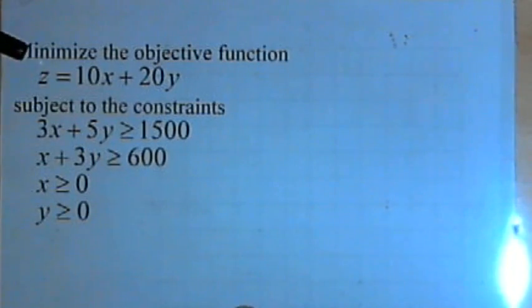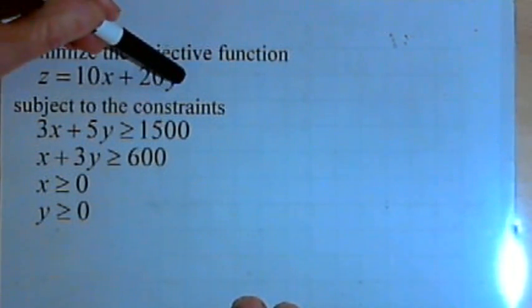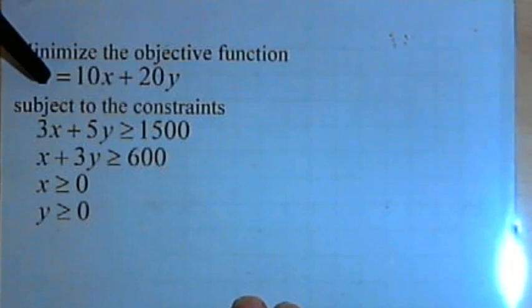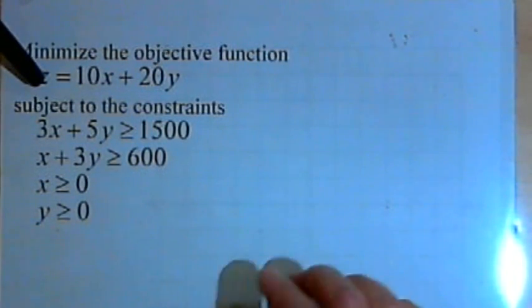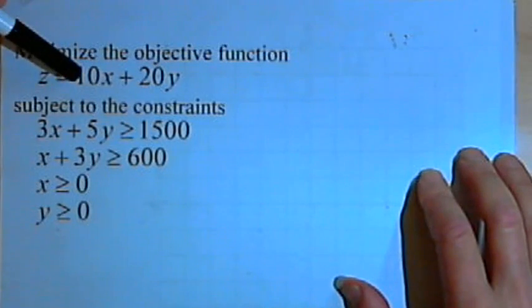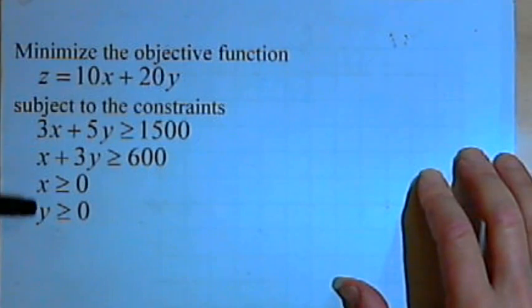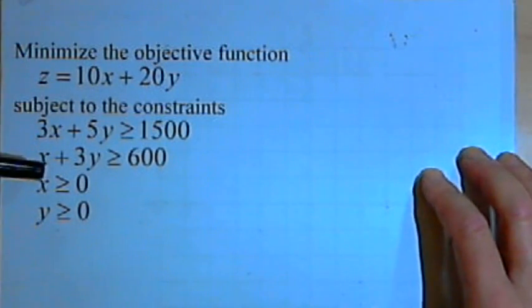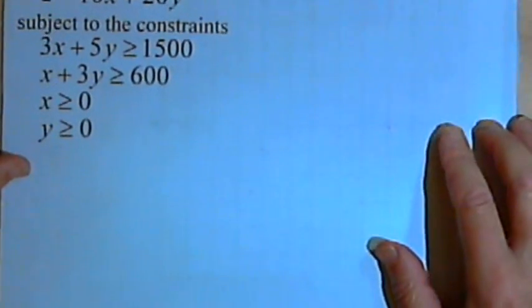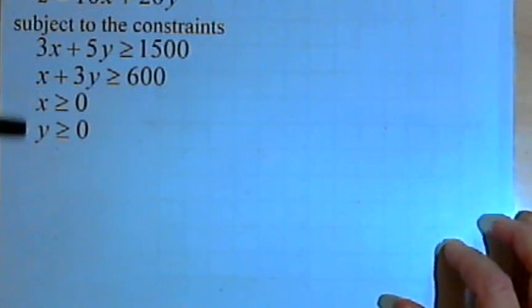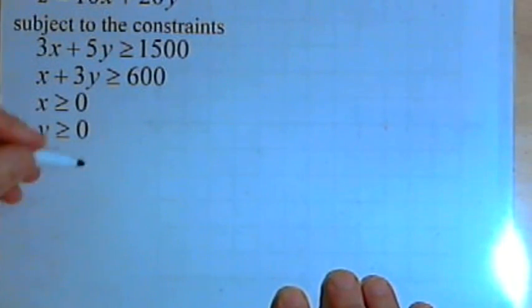What they want us to do here is find values for x and y that will make z as small as possible. We're minimizing it. We can't pick just any values. They have to be values that will work with these inequalities. So we're going to draw a graph for the inequalities. I've got x is greater than or equal to 0 and y is greater than or equal to 0. That means my graph is only going to be in the first quadrant.